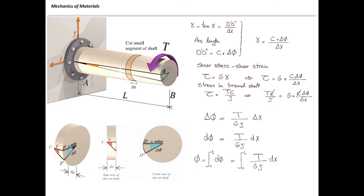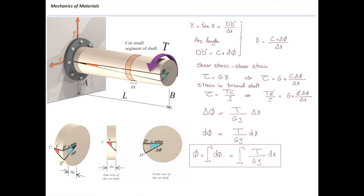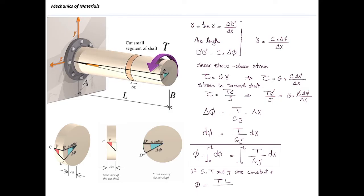That is the equation we were looking for — it gives the amount of twist in a torsional element. If the element is made of just one material, G is constant and can be taken outside the integral. If there is just one constant torque, T can also be taken out. If the cross-sectional area has a constant diameter, J can also be taken out. Integrating dx from 0 to L gives L, so we simplify the twist equation to TL over GJ.